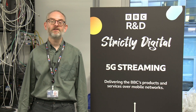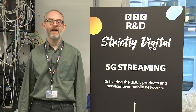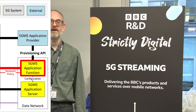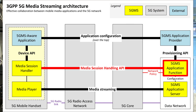5G media streaming specifies a media session handling network API that allows mobile applications to collaborate with the 5G network through a 5G MS application function with the aim of improving the quality of experience. Using this API, handsets can request a different network quality of service to satisfy the needs of a particular media streaming session.